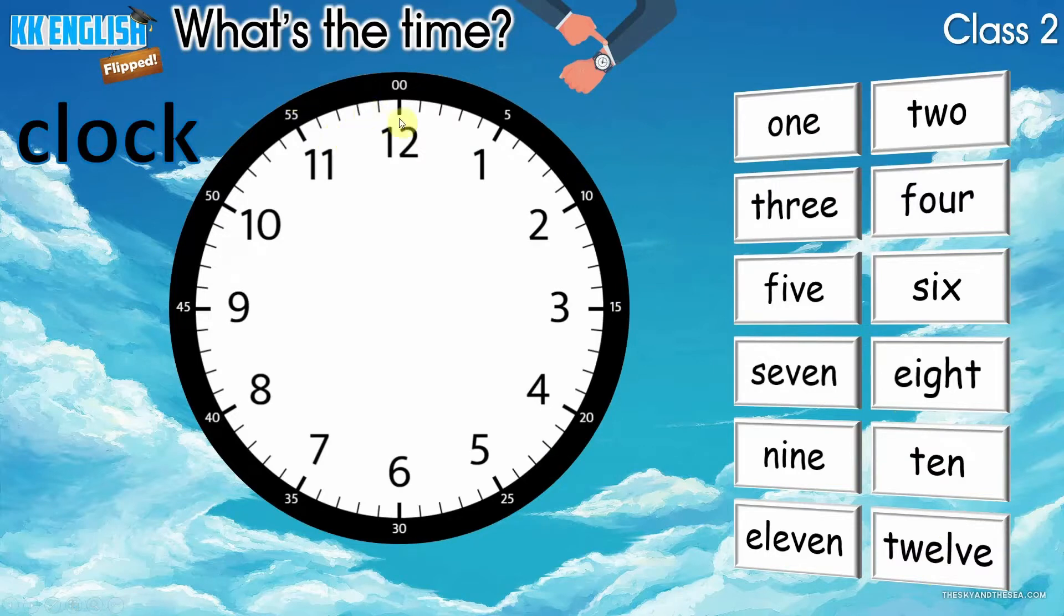This is a clock. There are 12 numbers on the clock. And there is a small finger. We call the small hand. Small hand就是时针. 时针会告诉我们几个小时. A small hand tells us the hour.